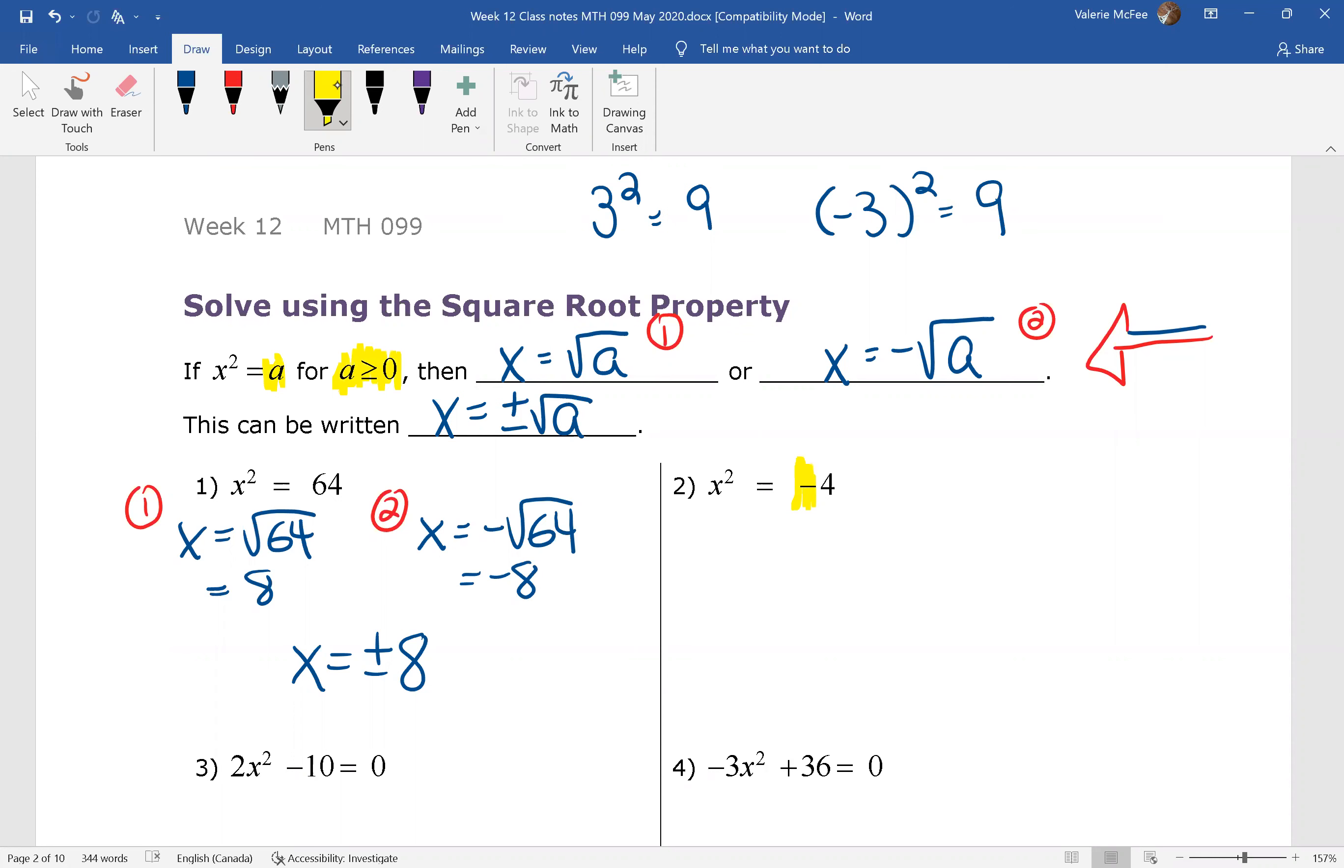What if you didn't notice that? Then you would have gone ahead and written that x equals the square root of negative 4 or x equals the negative square root of negative 4. Well, I hope now you noticed it because you know that this will give us no real solution. We can't find a real solution to the square root of a negative number.